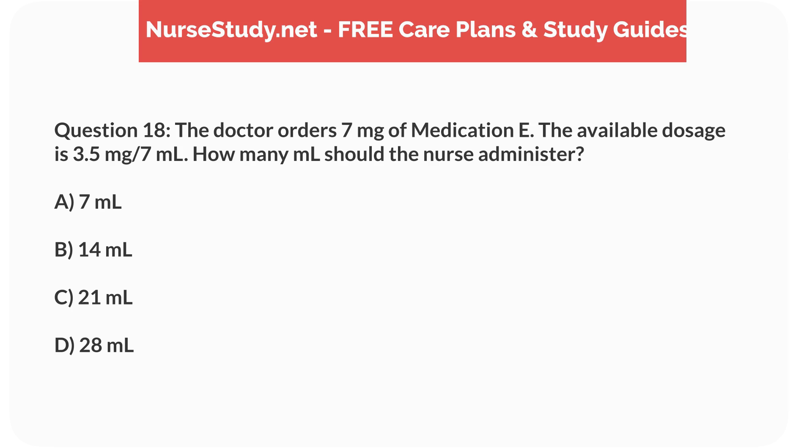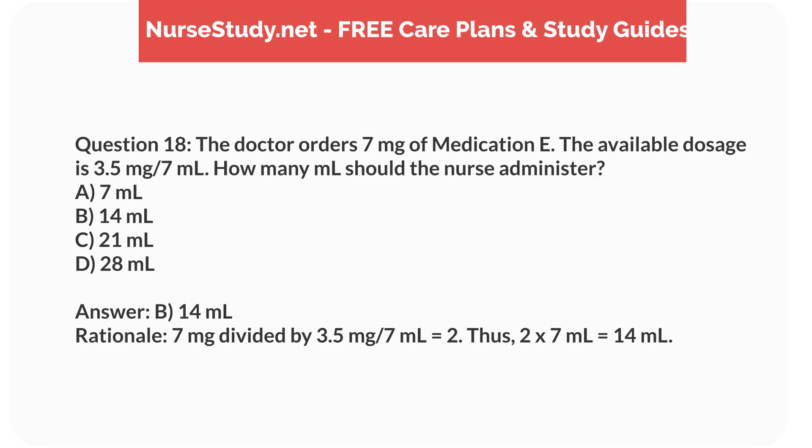Question 18. The doctor orders 7mg of medication E. The available dosage is 3.5mg per 7mL. How many mL should the nurse administer? a. 7mL, b. 14mL, c. 21mL, d. 28mL. Answer: b. 14mL. Rationale: 7mg divided by 3.5mg per 7mL equals 2. Thus, 2 times 7mL equals 14mL.